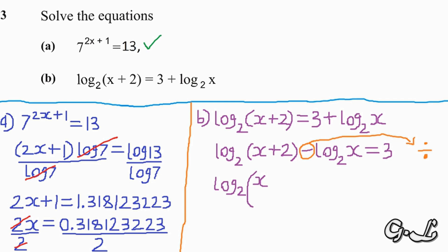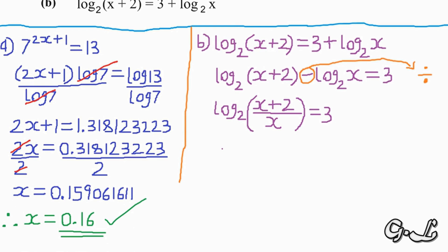In logarithmic functions, when you have a minus between two log terms of the same base, it means division. So log base 2 of x plus 2 minus log base 2 of x becomes log base 2 of open bracket x plus 2 over x close bracket equals 3.